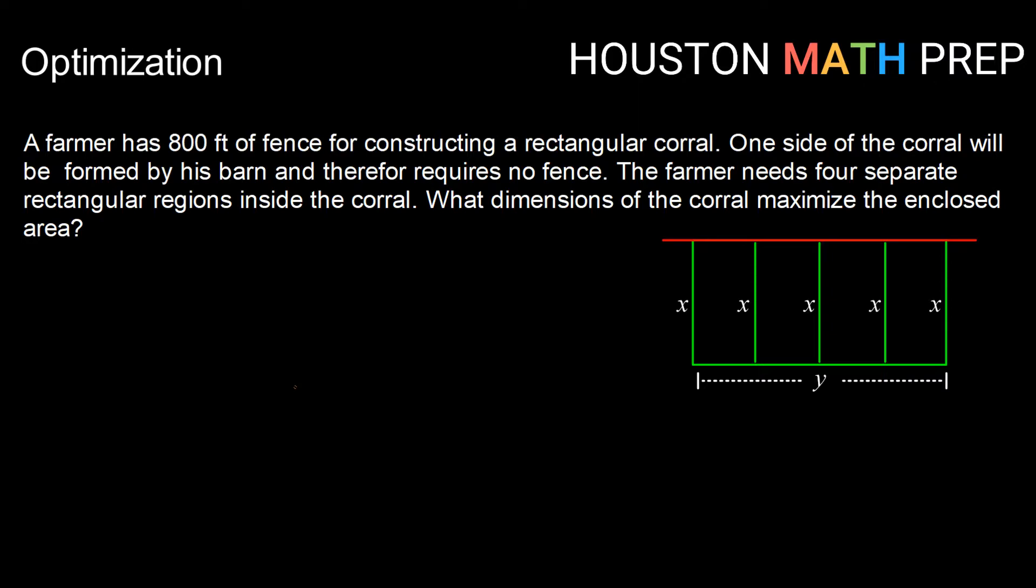So let's say we have a farmer who has 800 feet of fence for constructing a rectangular corral. One side of the corral will be formed by his barn, so therefore that side won't require any fencing. The farmer needs four separate rectangular regions inside the corral. So what dimensions of the corral would maximize that enclosed area?